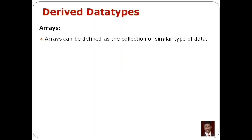An array can be defined as the collection of similar type of data. When we collect and store the same type of data, that is called an array. If we want to store a single integer value, we can store it in a variable. But when we want to store a set of integer values, that is the concept of arrays.